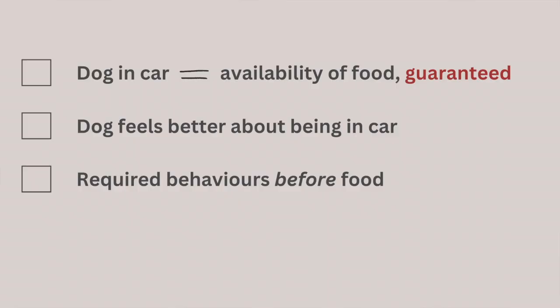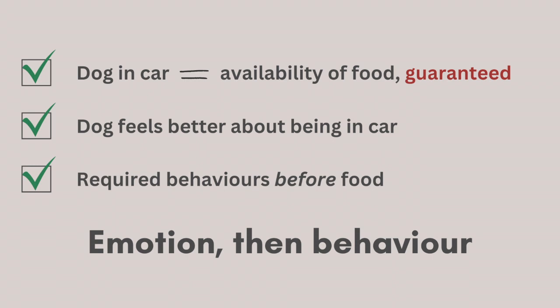Here are a couple more examples of using DS and CC techniques before using reward-based techniques. Let's say your dog paces and barks in the car. We'll work towards helping him feel better about being in the car in general by pairing this with something good, regardless of whether he's standing, sitting, lying down, or moving around. And once that's achieved, and only then, we'll begin asking him to sit inside the car before receiving a reward. Emotion, then behavior.